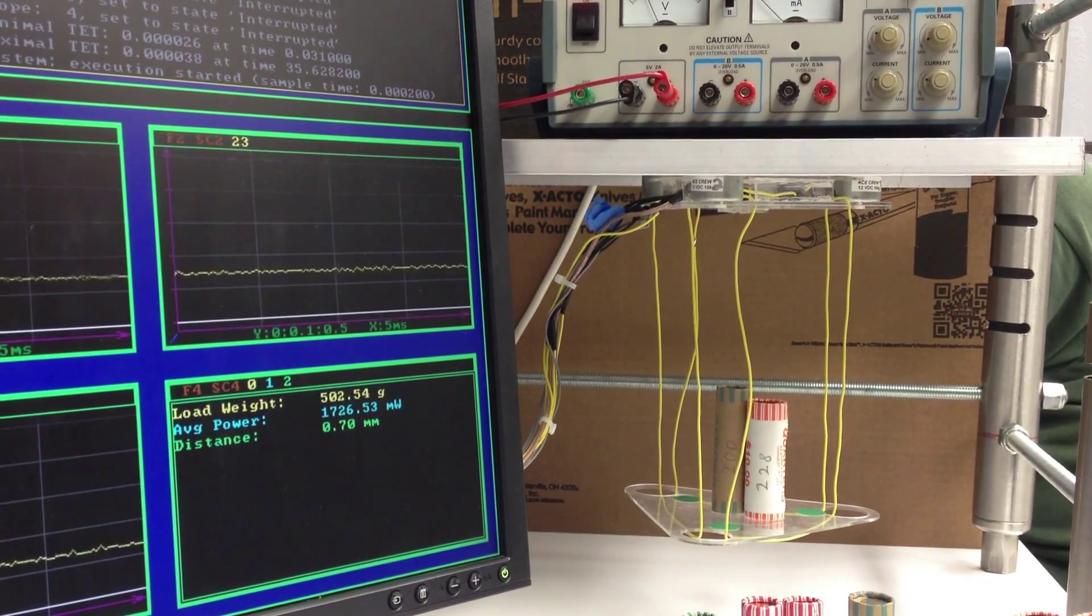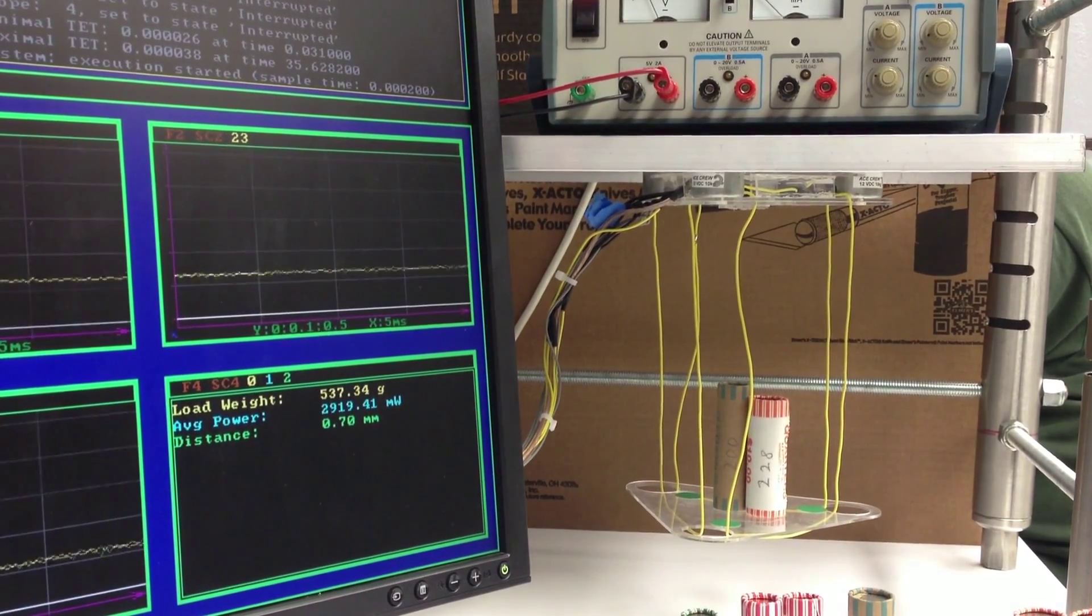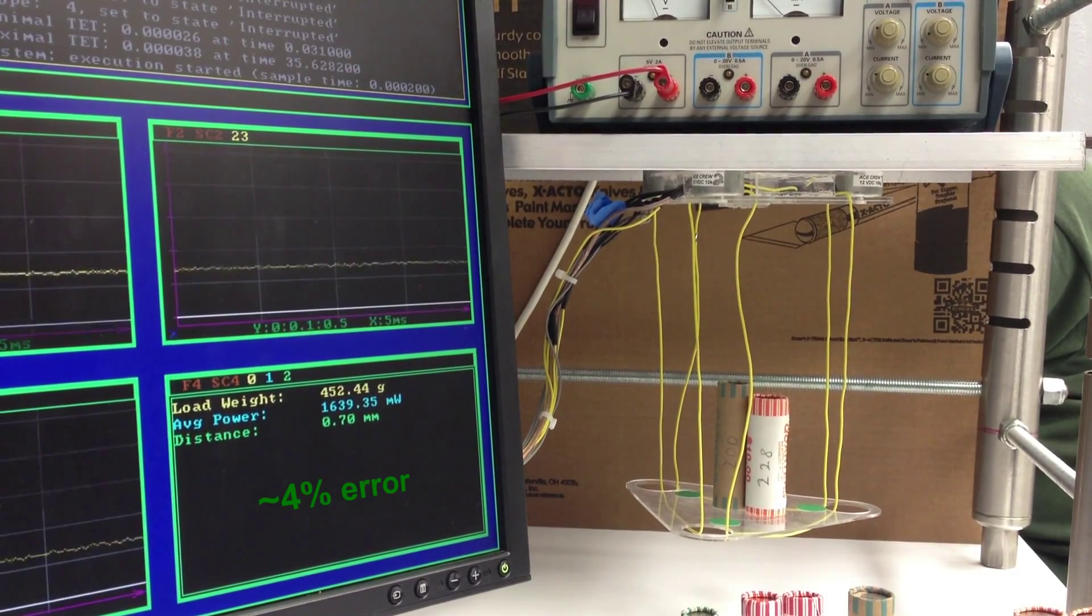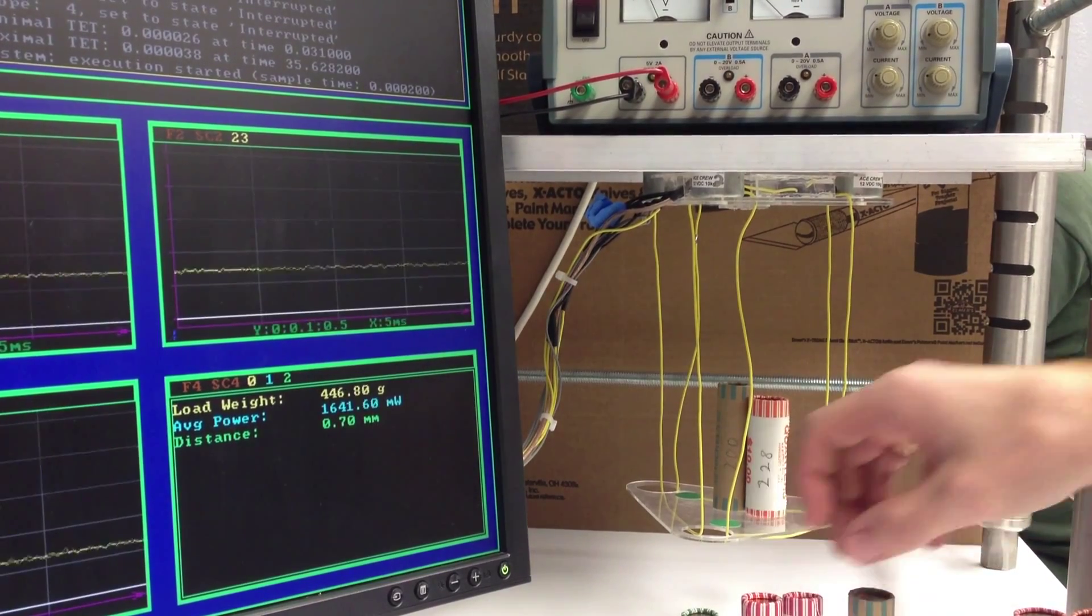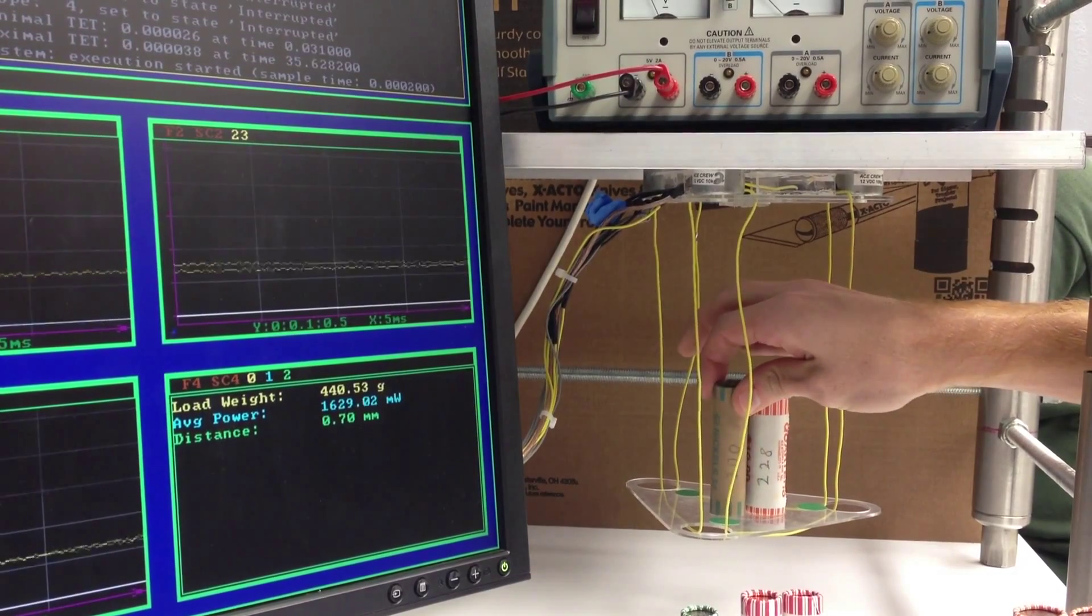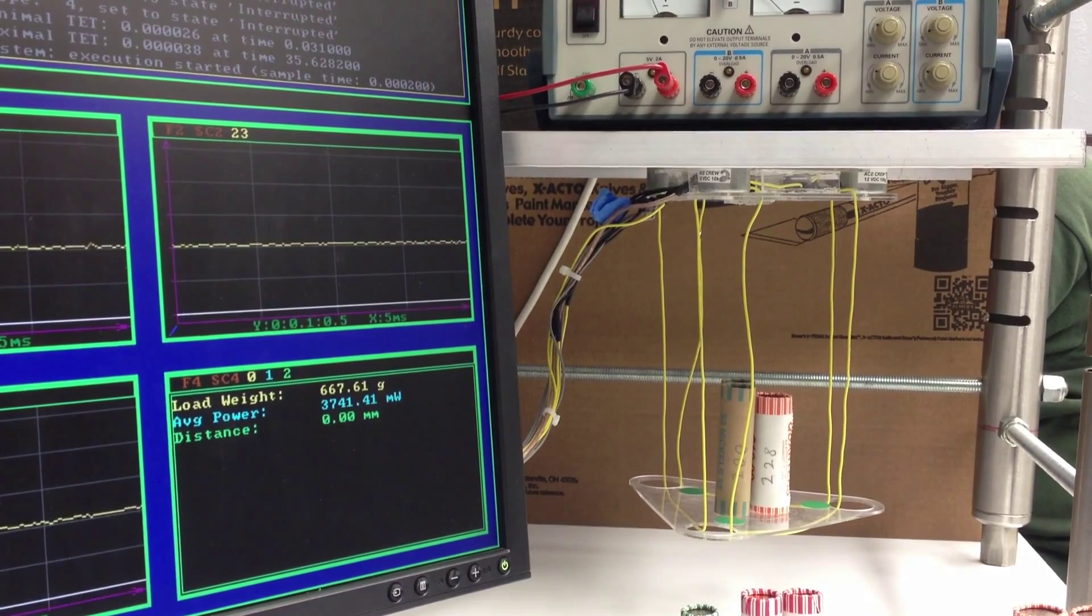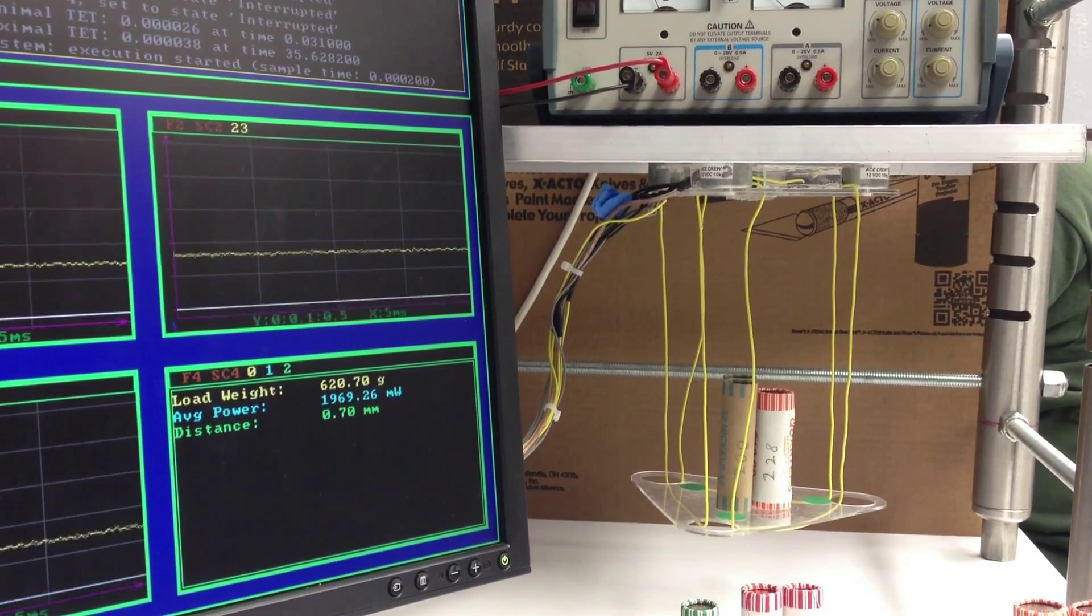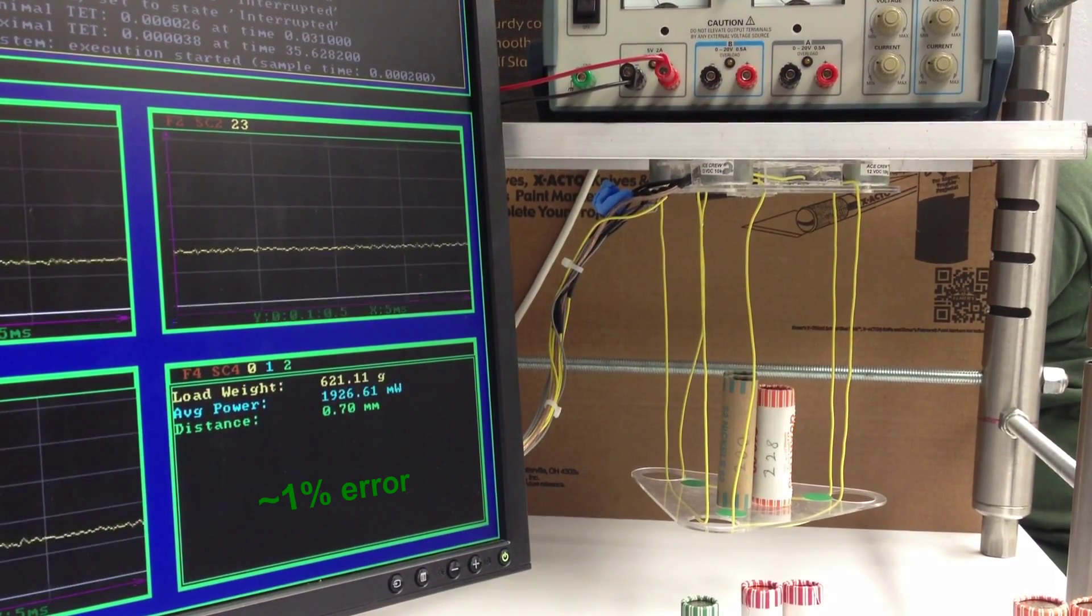I would also like for you to take note that our average power consumption used to sustain hovering will increase when more load is applied. So let's go ahead and test once more with 628 grams and see just how accurate our scale can be. This time we were more accurate in measuring about 621 grams. That is less than 1% error.